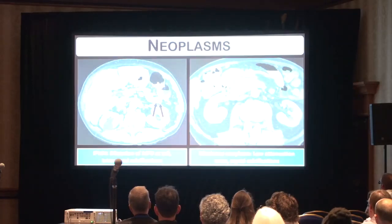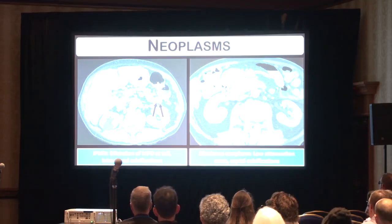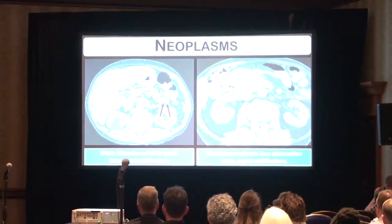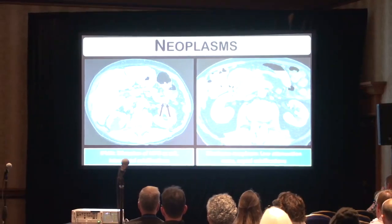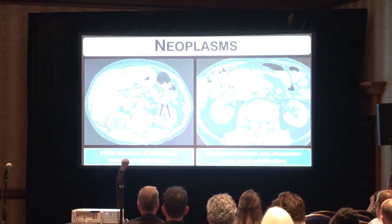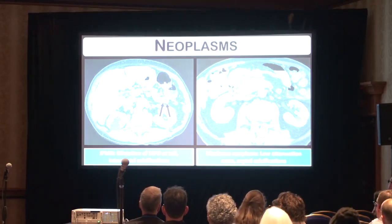We can contrast that appearance with these neoplastic lesions. On the left-hand side we have an IPMN, and in this case we can see dilation of the main duct at the tail as well as several calcifications present within the duct itself. And then on the right, we have a mucinous neoplasm that appears as a low density mass with septal calcifications.